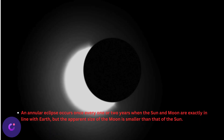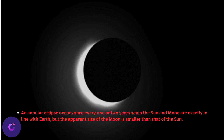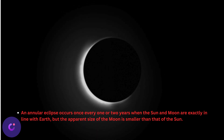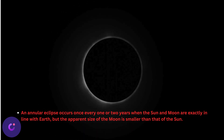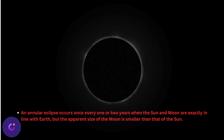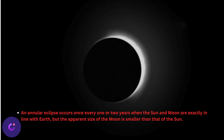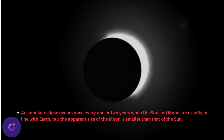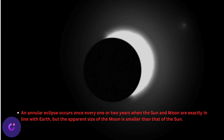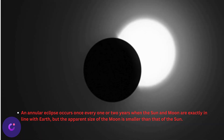An annular eclipse occurs once every one or two years when the sun and moon are exactly in line with earth, but the apparent size of the moon is smaller than that of the sun.